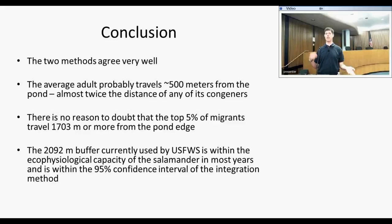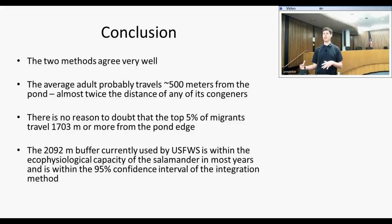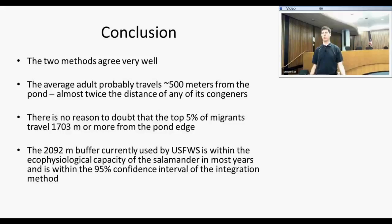Our conclusion is that the two methods — the integration method and the individual recapture method — agree very well. The average adult probably does travel close to 500 meters from the pond, almost twice the distance of any of its congeners, and there is no reason to doubt that the top 5% of migrants are going up to 1,703 meters. The current buffer for California tiger salamander habitat used by the U.S. Fish and Wildlife Service — any habitat within 1.3 miles (2,092 meters) of a breeding pond — falls within the confidence interval of our estimate, so we think that's a pretty good buffer to continue using.